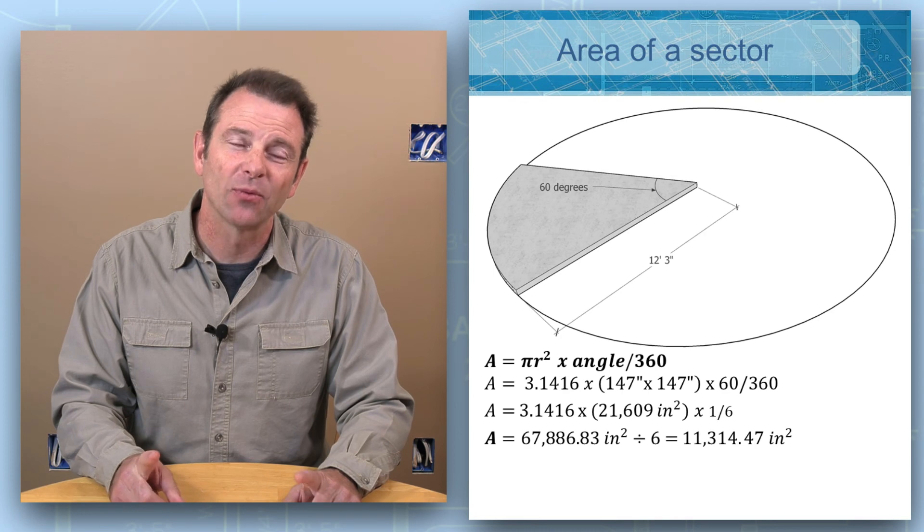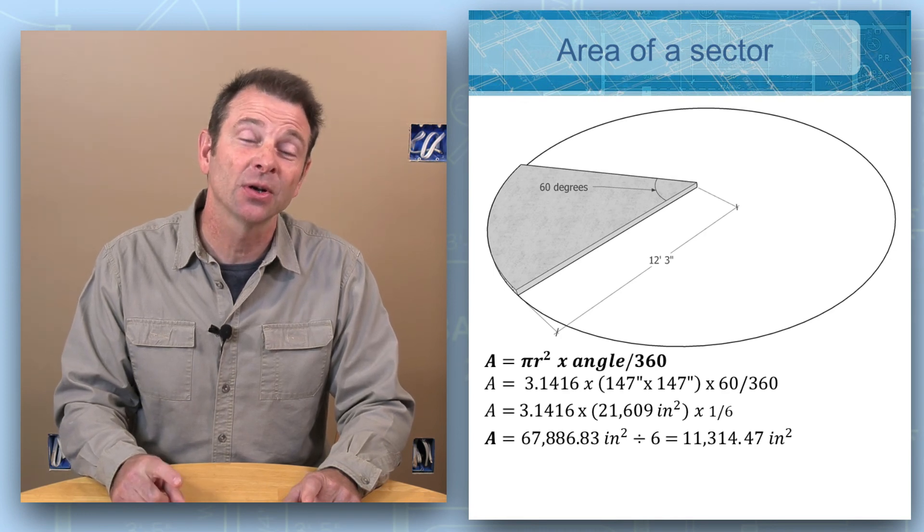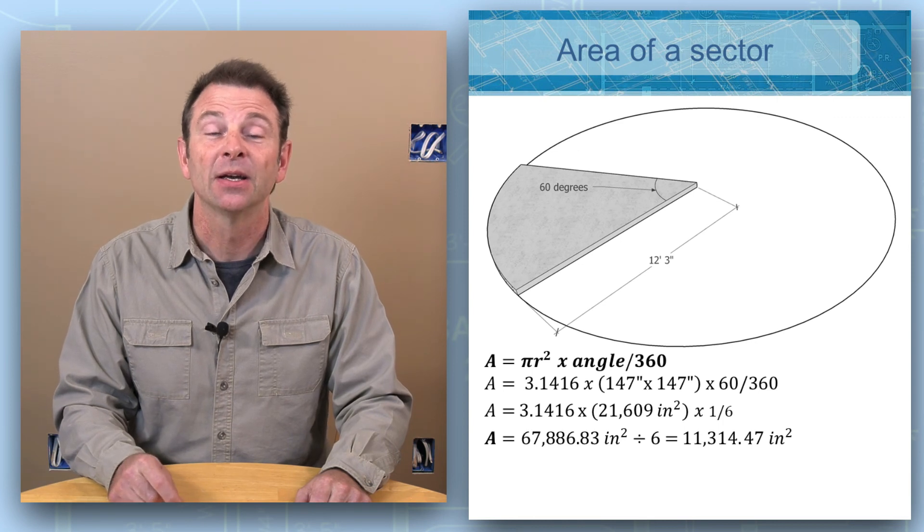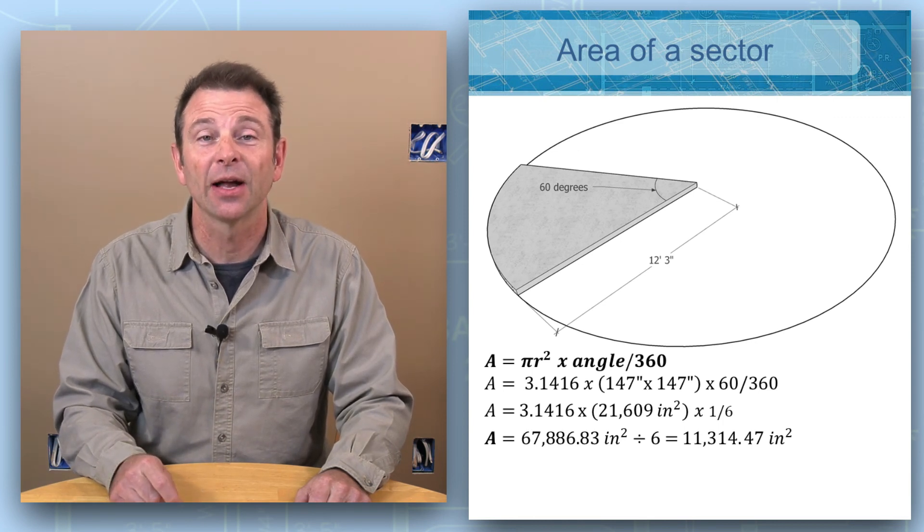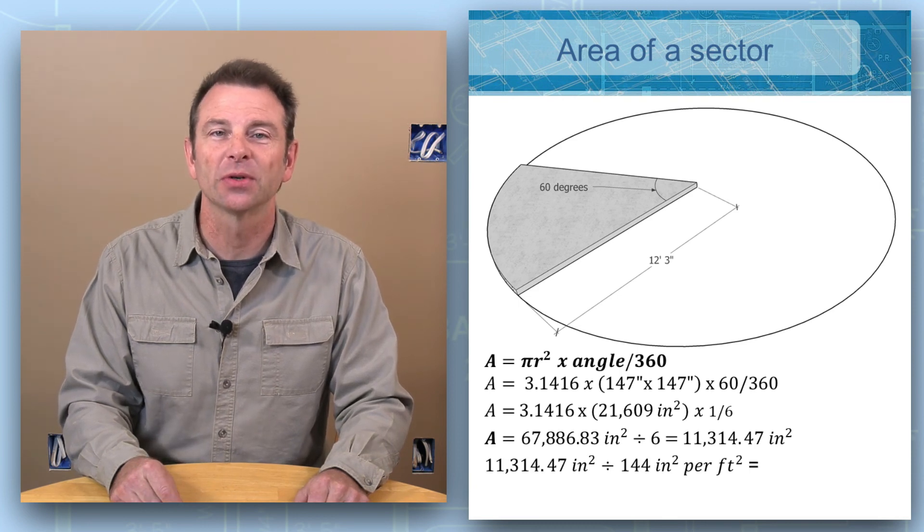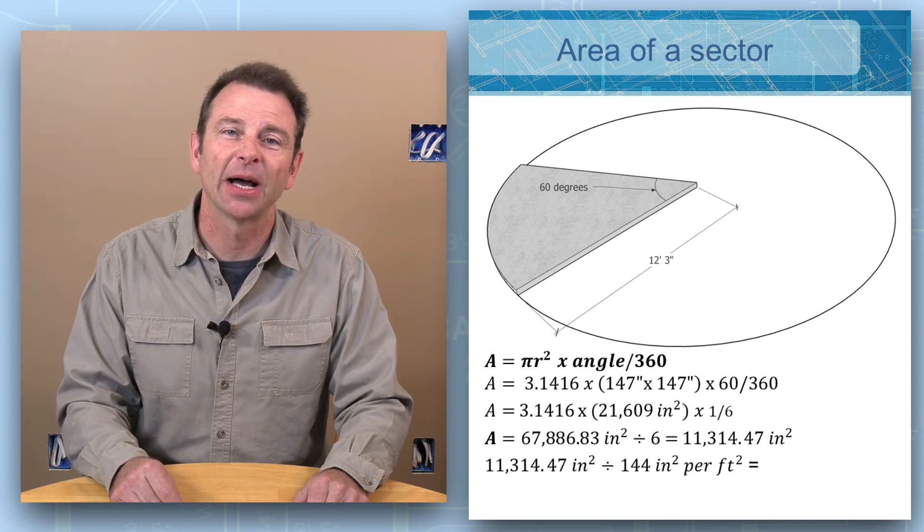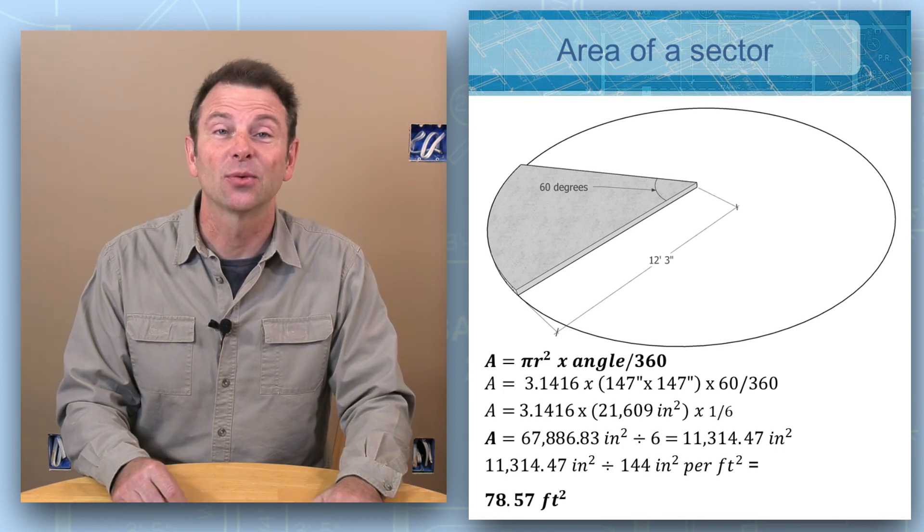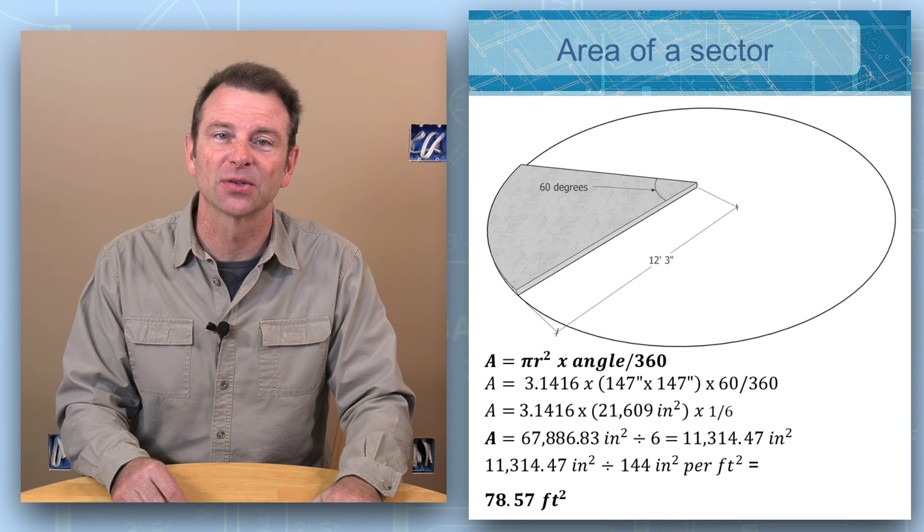We're not quite done yet. We have one more step to do because the answer here, according to the word problem, should be expressed in square feet. We have total square inches here, and we can divide the total square of 11,314.47 square inches divided by 144 square inches per square foot, equals 78.57 square feet.